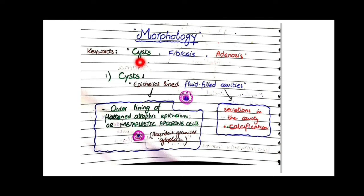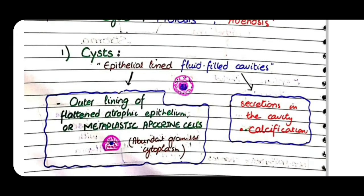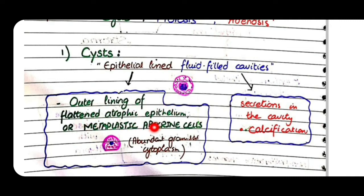The first keyword is cyst — epithelial-lined fluid-filled cavities. You can see a fluid-filled cavity representing secretions with an epithelial lining. This outer lining consists of flattened atrophic epithelium or metaplastic apocrine cells, and by fluid-filled cavities we mean there are secretions in the cavity which may be calcified.